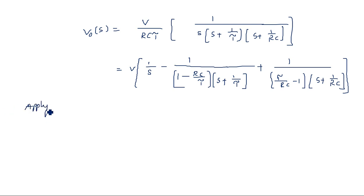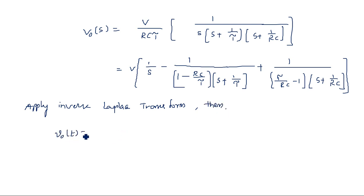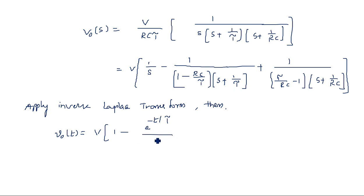Applying the inverse Laplace transform, V_naught(t) = V into [1 minus e to the power minus t/tau divided by (1 minus RC/tau) plus e to the power minus t/RC divided by (tau/RC minus 1)]. The constant RC/tau is not disturbed throughout.